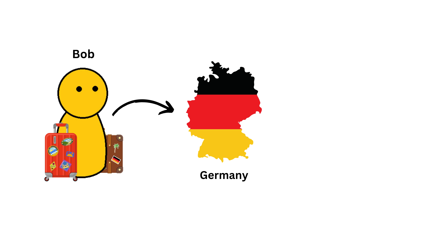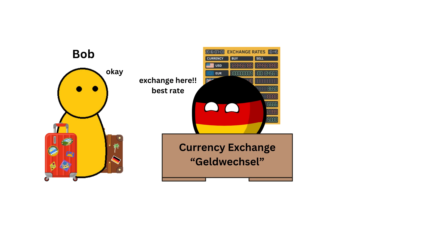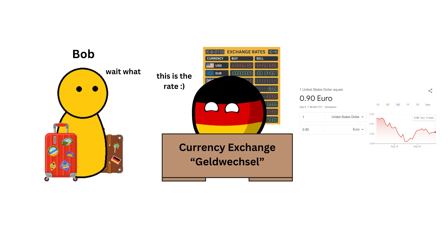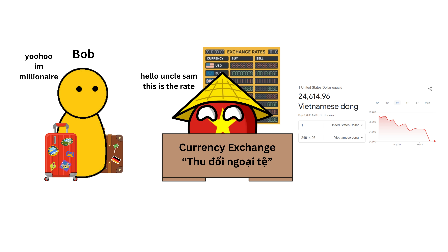Now, he wants to travel to Germany, which uses the euro as its currency. But when Bob tries to exchange his money, he finds that one U.S. dollar is equal to 90 cents euro. Then Bob goes to Vietnam, where one U.S. dollar is equal to 25,000 dong.